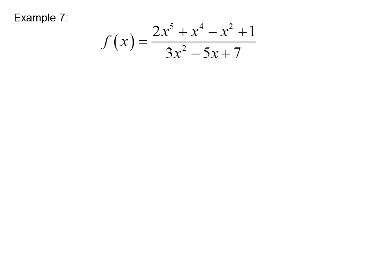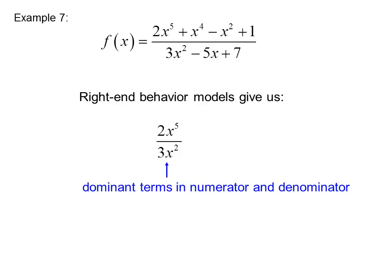Here is another example — which, for some mysterious reason, also appears to be labeled Example 7. f of x equals (2x to the fifth plus x to the fourth minus x squared plus 1) over (3x squared minus 5x plus 7). The right-end behavior model is 2x to the fifth over 3x squared, since those are the dominant terms in the numerator and denominator. This reduces to 2x cubed over 3, so as we move to the right, the graph should approximate the curve of 2x cubed over 3.